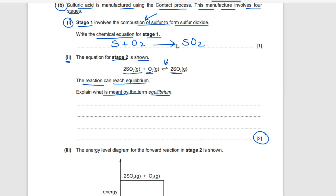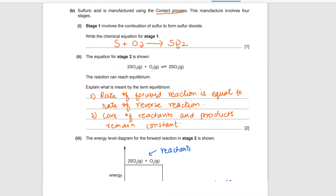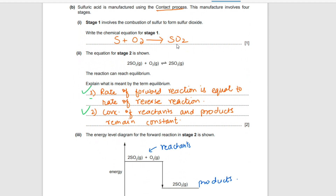Equilibrium has two key points. First, the rate of the forward reaction is equal to the rate of the reverse reaction — it appears like dynamic equilibrium. Second, the concentrations of reactants and products remain constant and do not change. In a normal reaction, reactants decrease and products increase, but at equilibrium the concentrations of both are kept constant.